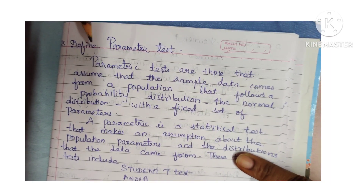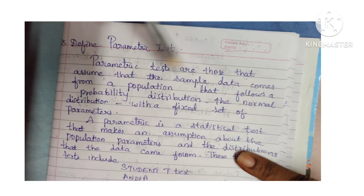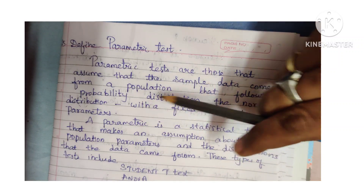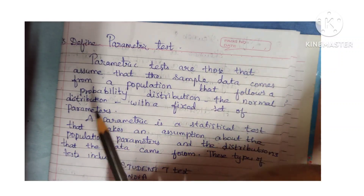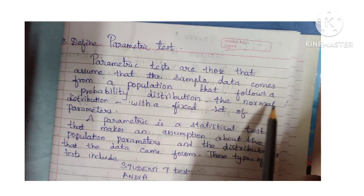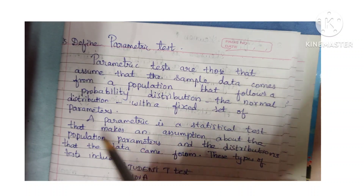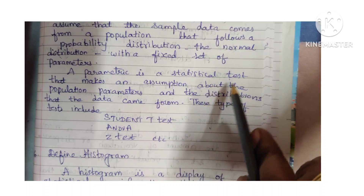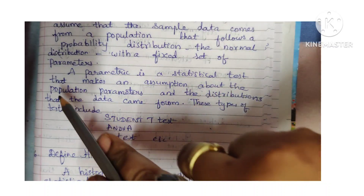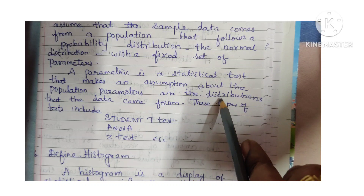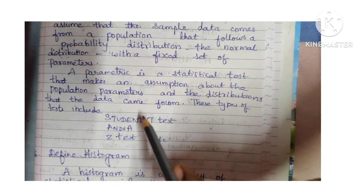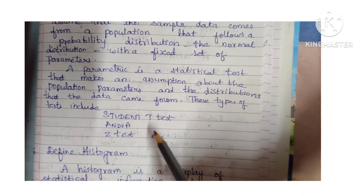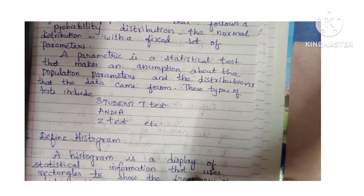Types of parametric tests include student t-test, ANOVA, and Z-test.